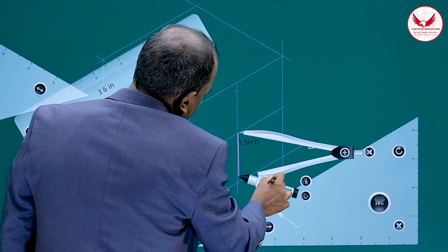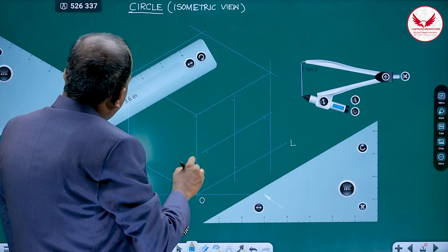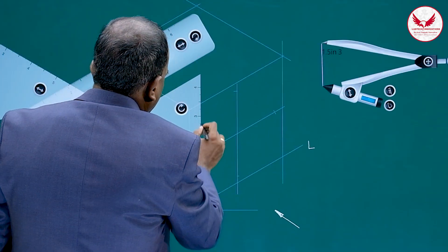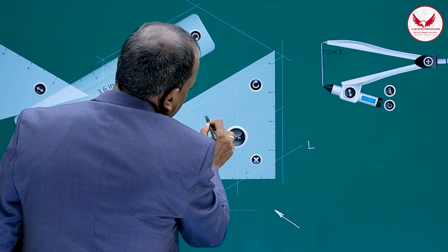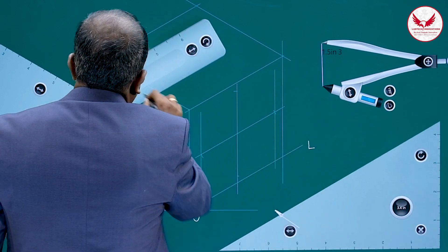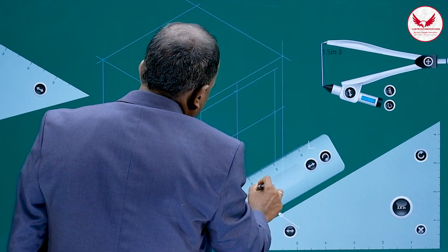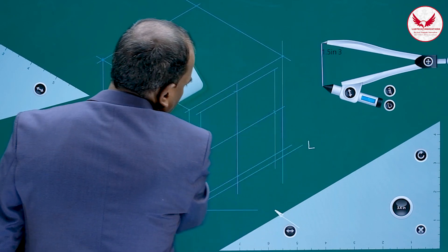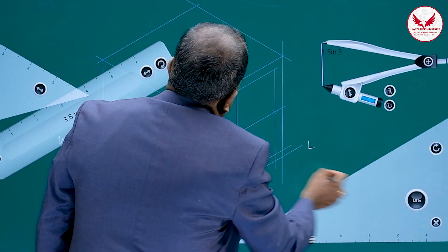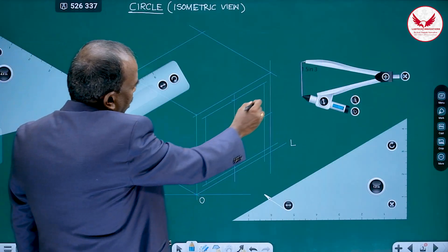Using those four arc cuts, draw lines through each point parallel to height and parallel to length to construct the rhombus. This gives a perfect rhombus whose sides are equal to the diameter of the circle.